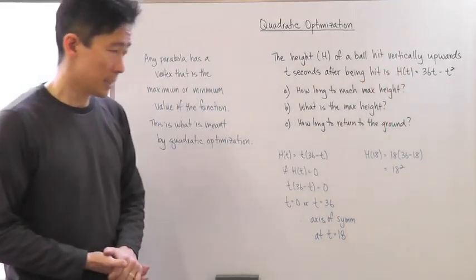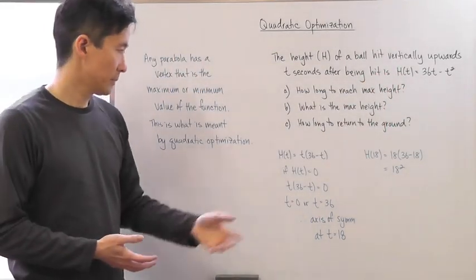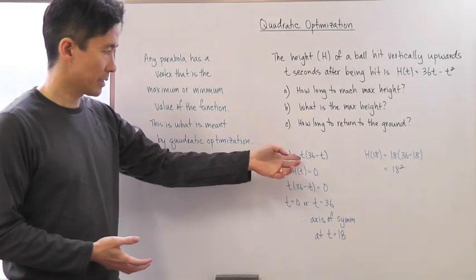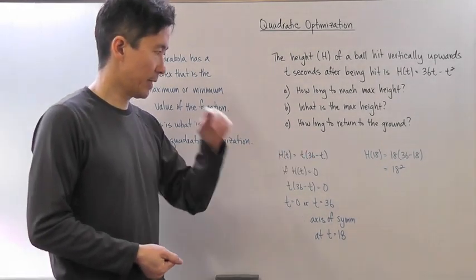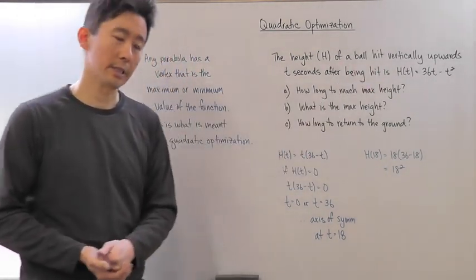If we analyze this function, we know that h(t) is going to be equal to t times 36 minus t, because I just factored out the t.